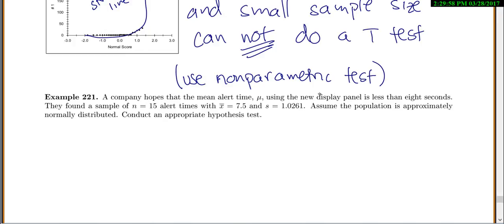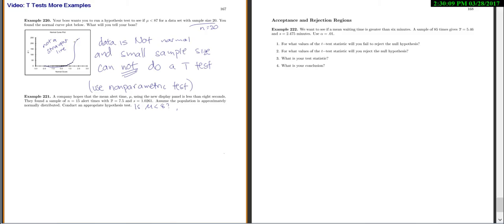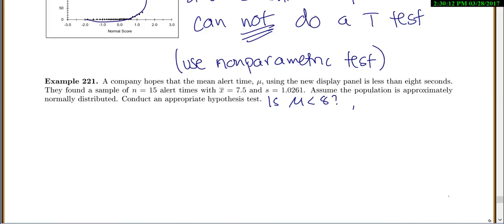So let's write down anything they want us to say or look at. So we have a new display panel, we're hoping it's less than 8 seconds. So our question of interest is mu less than 8. My sample size is 15, so that's a small sample. x bar equals 7.5, s equals 1.0261, and it does say assume that it's normally distributed, which is good because either we have to have a large sample size or normal. In this case it's normal.